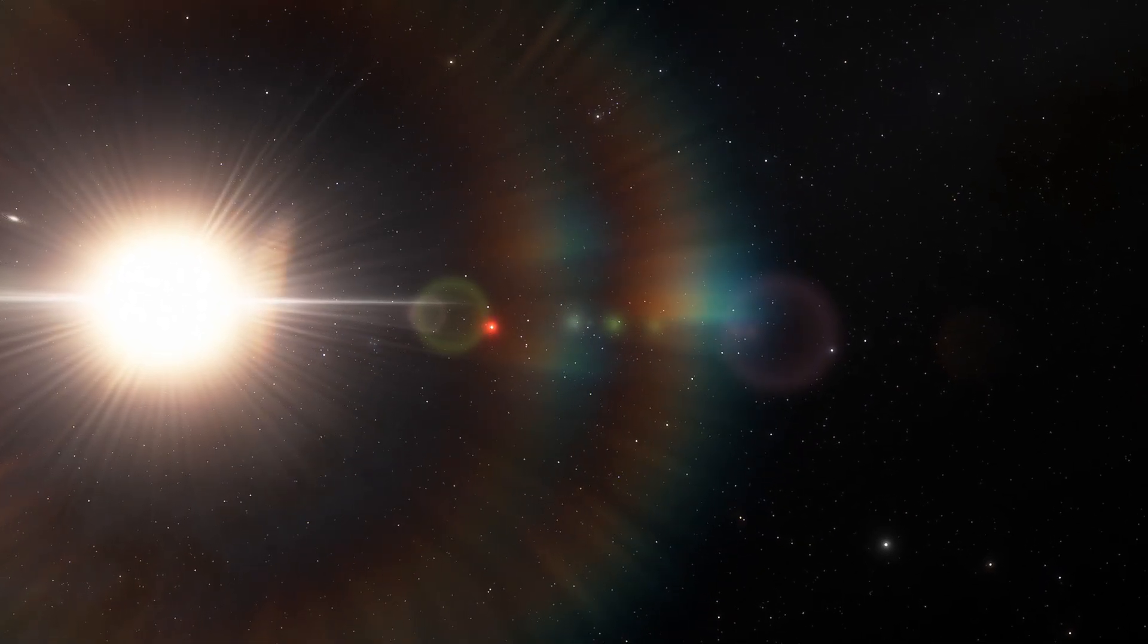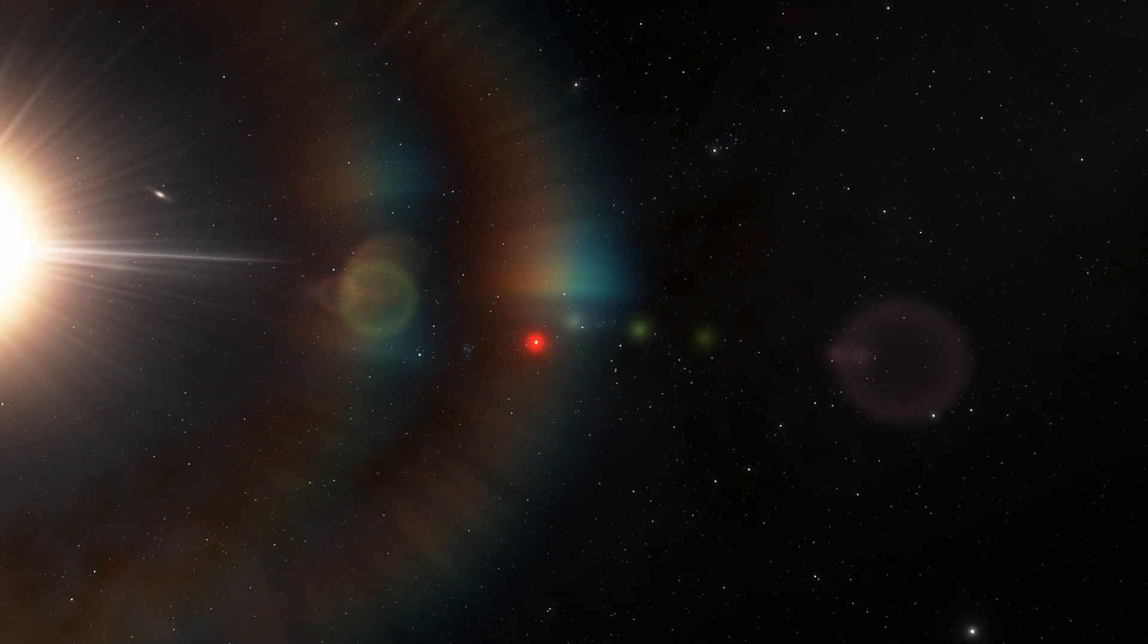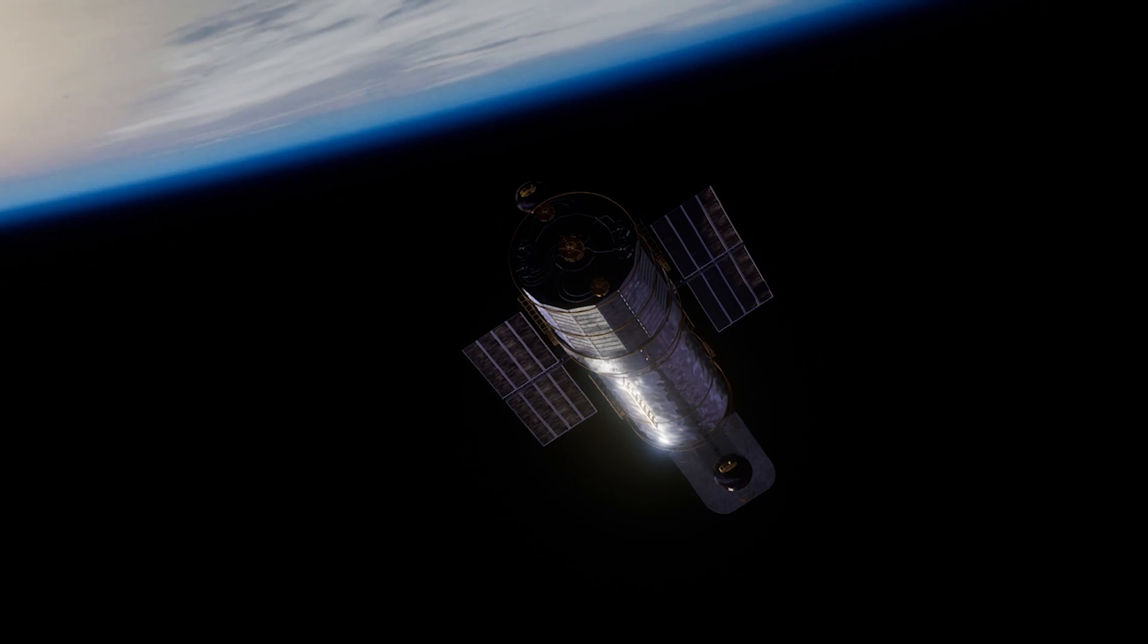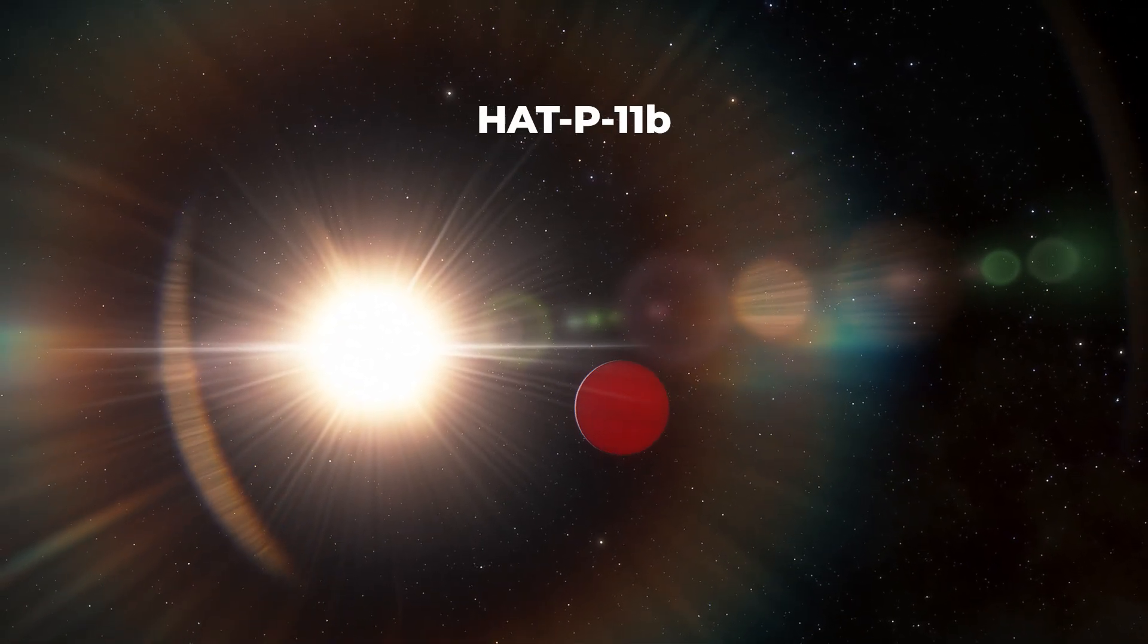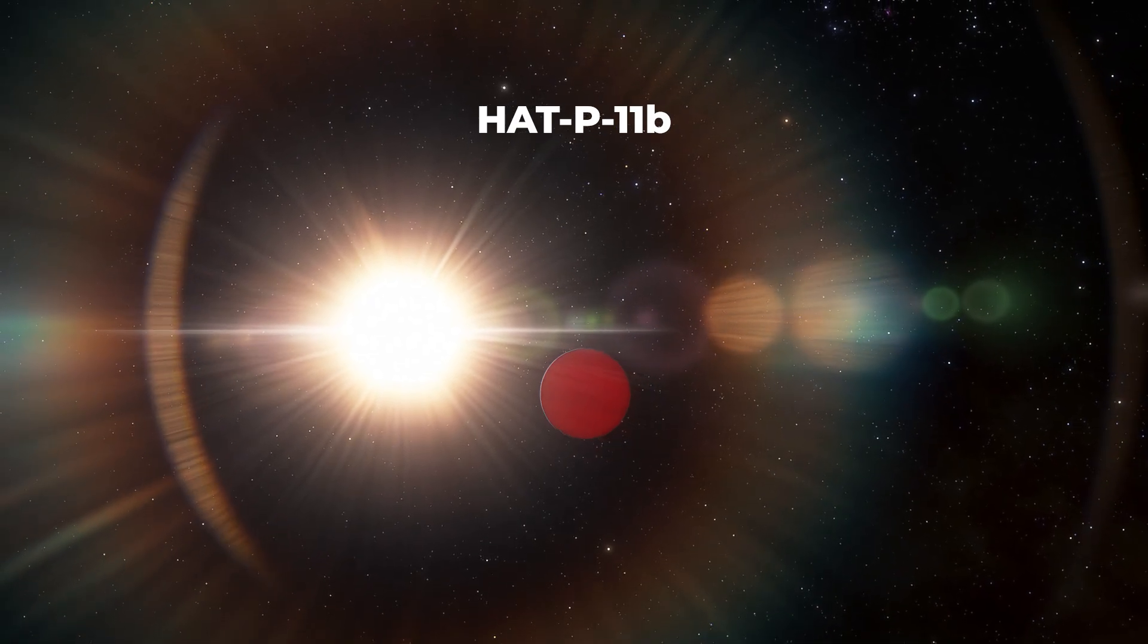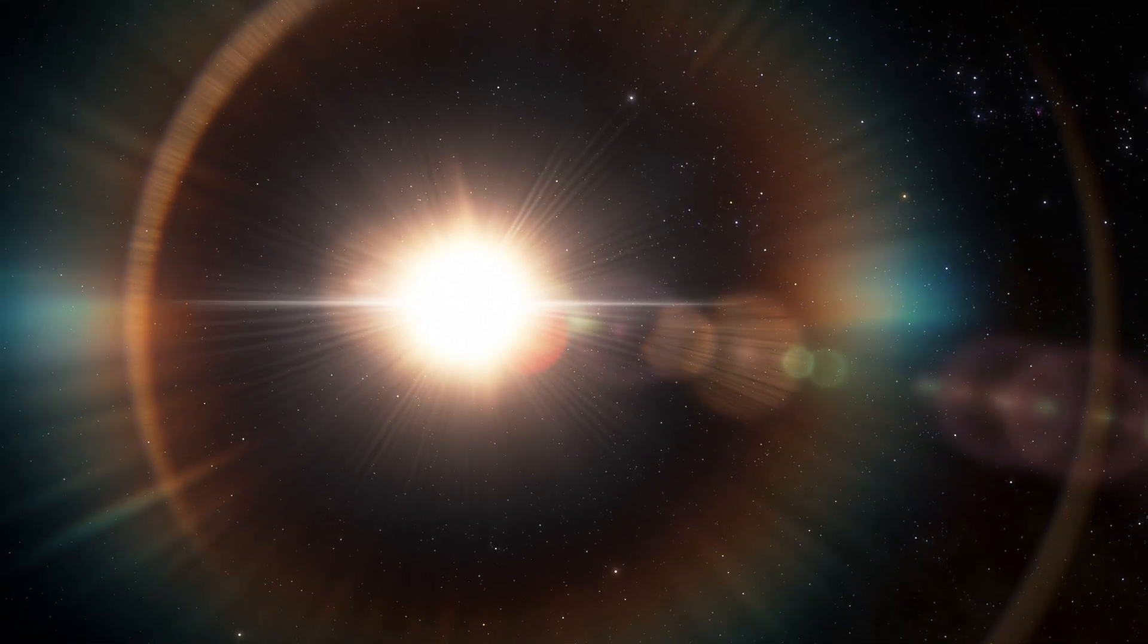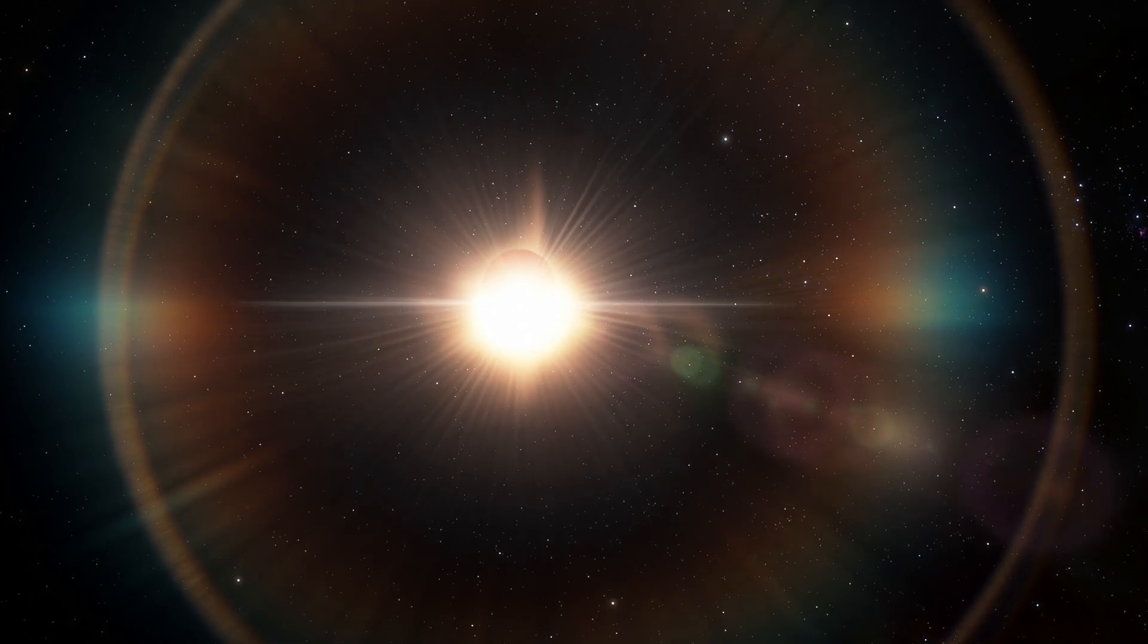For the first time, astronomers believe they've detected the signature of a magnetic field in a planet outside the solar system. Using the Hubble Space Telescope, an international team of astronomers observed the planet HAT-P-11b, a Neptune-sized planet about 123 light-years away, pass in front of its host star six times in what is known as a transit.